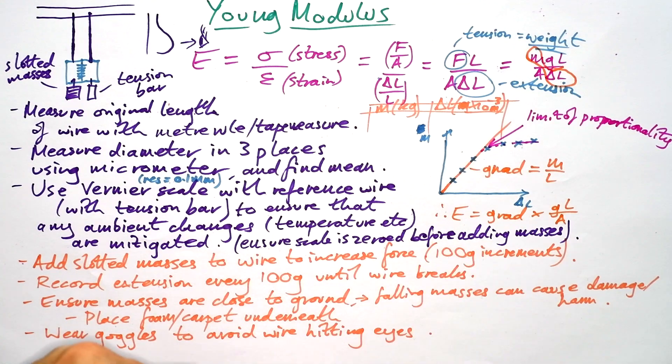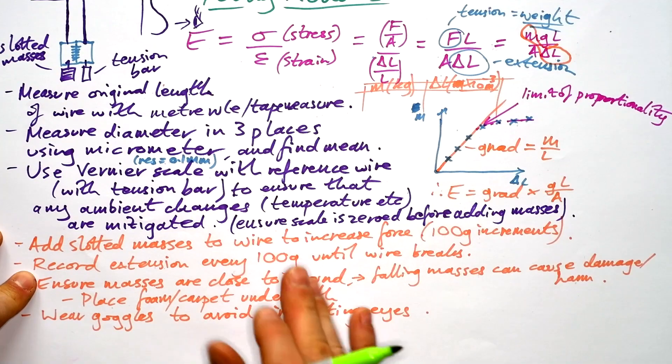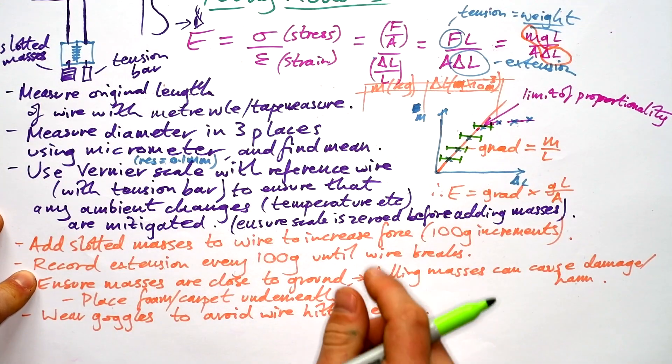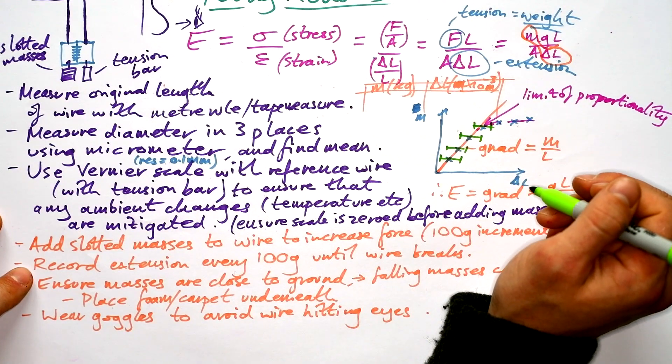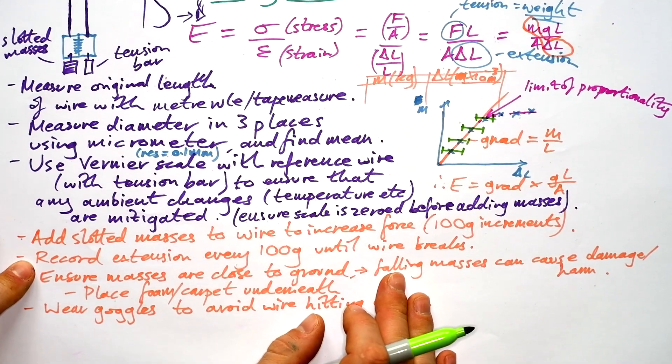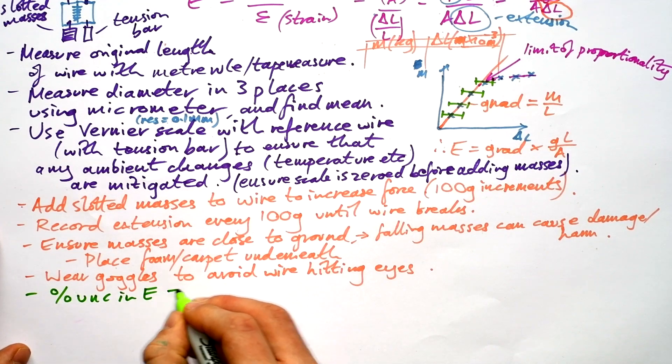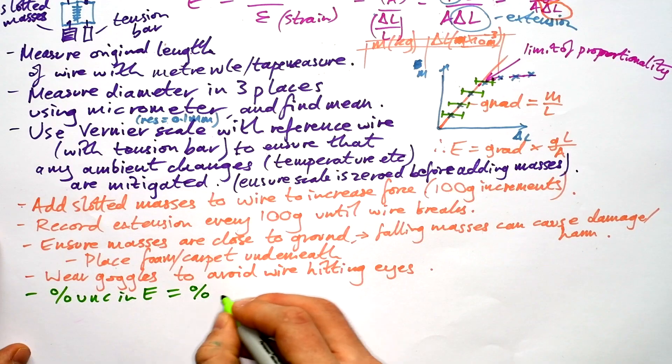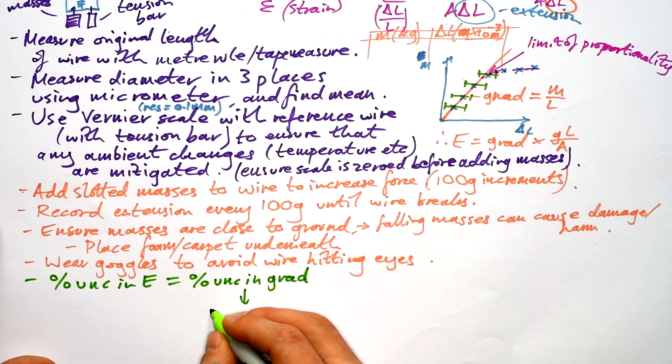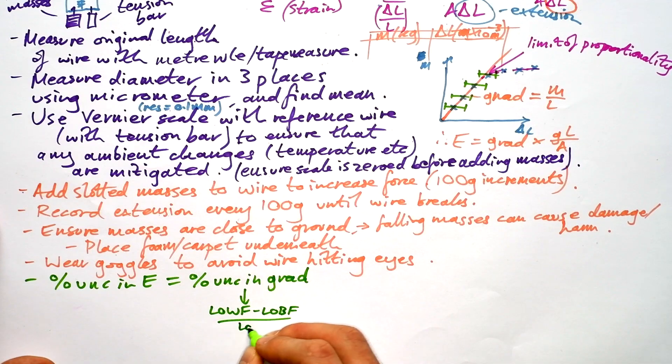We only have to multiply by g once instead of having to multiply all our masses and then trying to plot them. Bit of a nightmare that is. So there's going to be an uncertainty and that's going to be in our delta L, isn't it? But you will have to decide on where the limit of proportionality is. That's going to change how you draw your line of best fit and therefore line of worst fit as well. So the percentage uncertainty in E right at the end is going to be equal to the percentage uncertainty in the gradient. And as per usual, we get that from line of worst fit, take away line of best fit divided by line of best fit times 100.